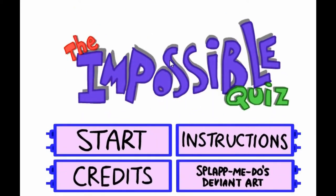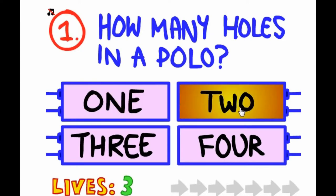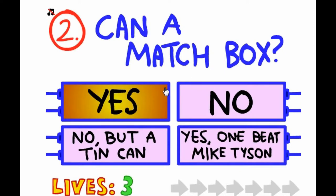I'll tell you all the cheats and why it's that answer. So, how many holes in a polo? At first I thought it was two because mine has two, but actually it's four. Can a match box? No, but a tin can. Click that one.